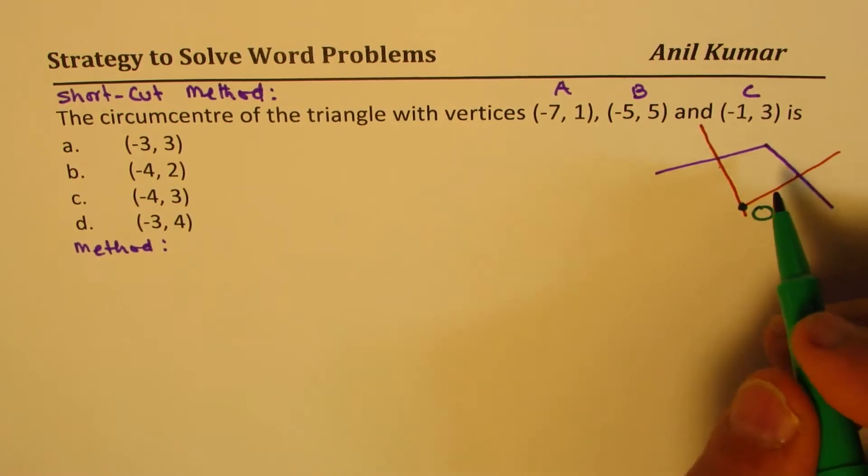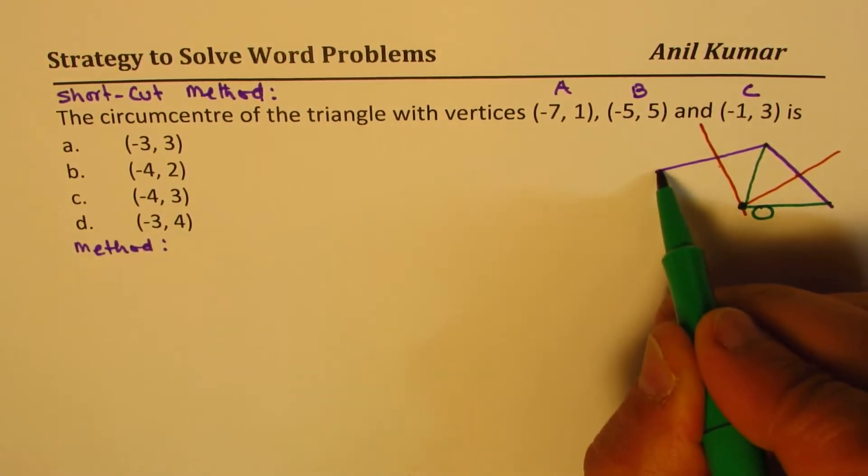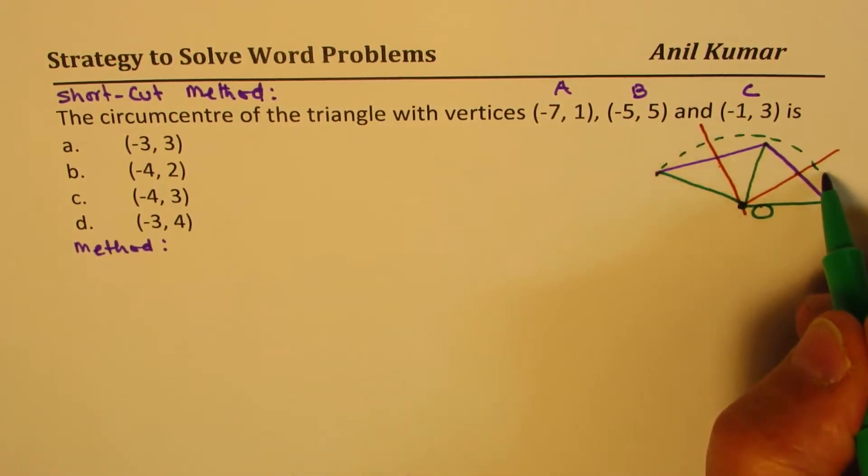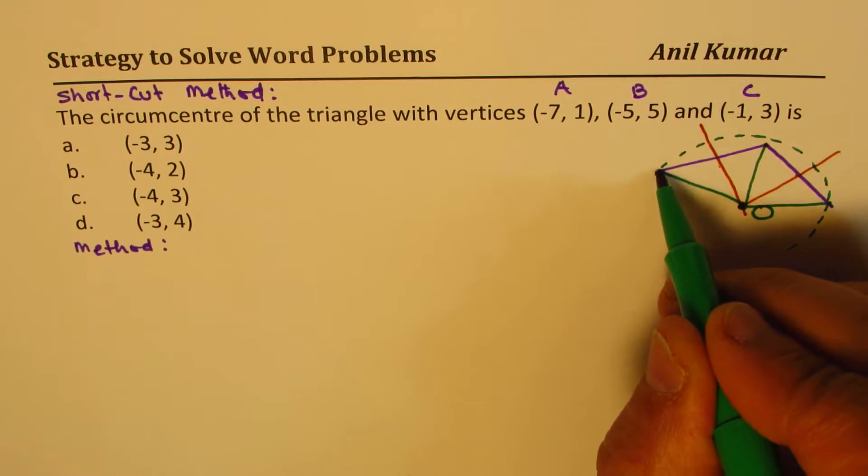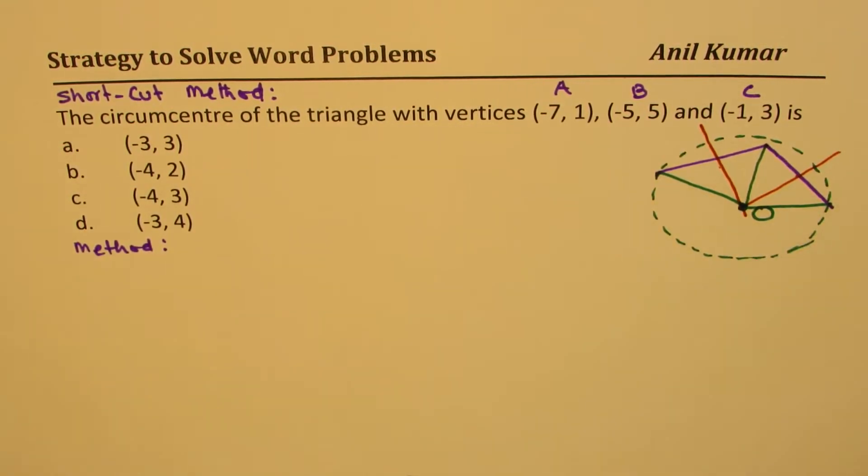We'll call this as O, from where all these distances are equal. So you can form a circle. That is the whole idea. So that becomes the circumcenter. I hope the concept is clear to you.